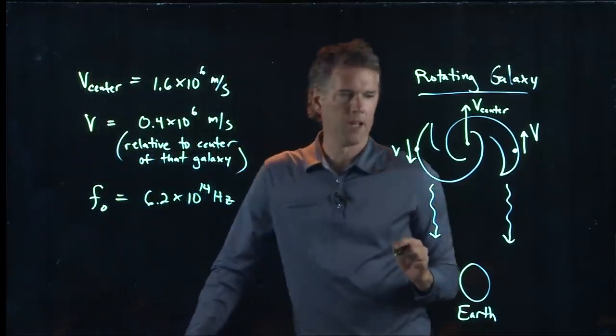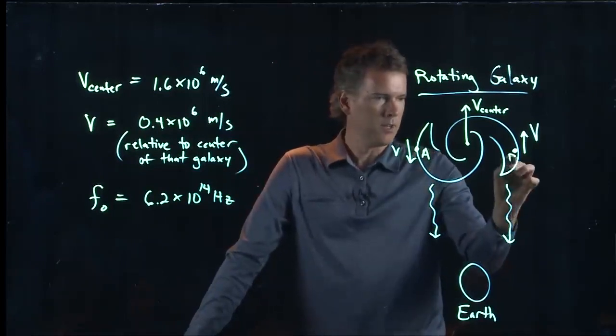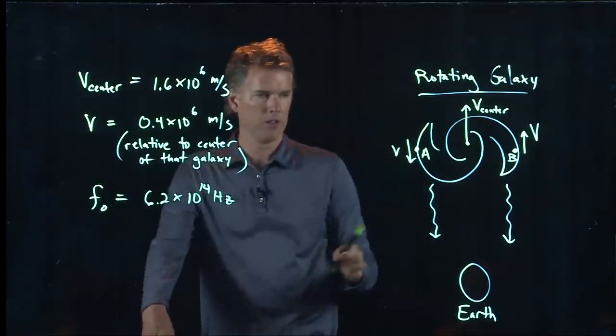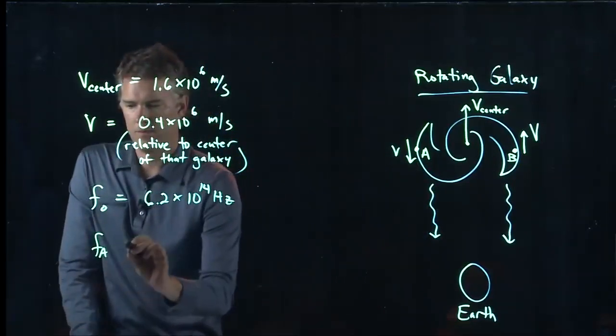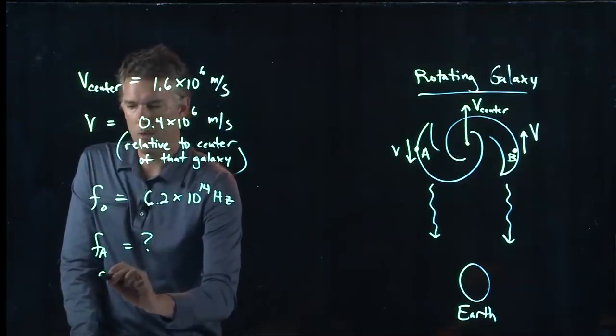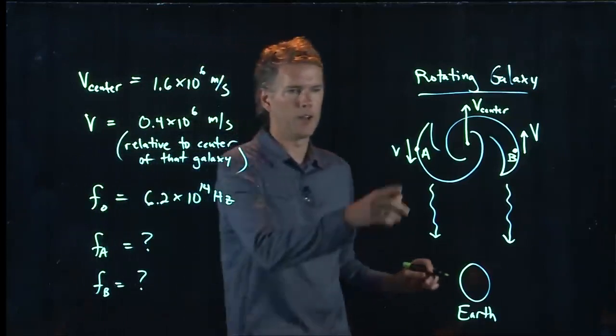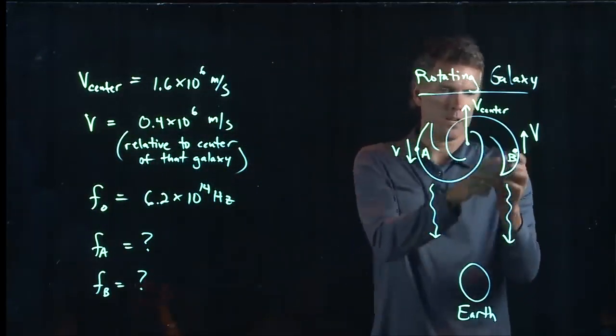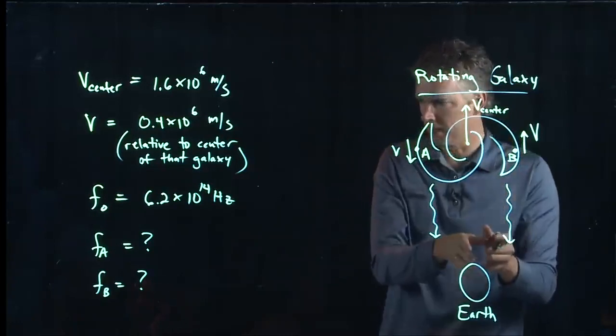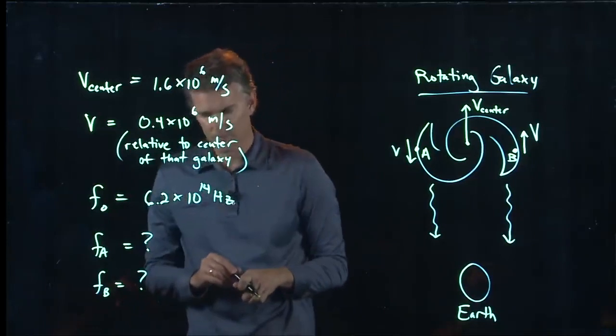And now we want to find the following. We want to figure out what is the observed frequency from A and what is the observed frequency from B. Okay, you've got a star on this side that is emitting some light and we're going to collect it. You've got a star on this side that is emitting some light and we're going to collect it. And we want to figure out what those frequencies are.